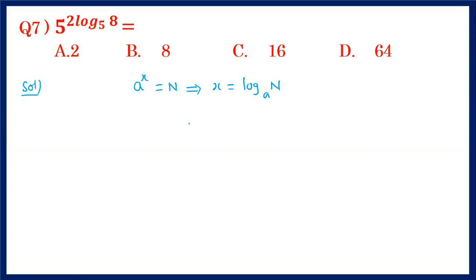Now if you substitute this x back into the exponential form, a^x = n becomes a^(log_a n) = n. So we've got an important result here: a^(log_a n) is always equal to n.